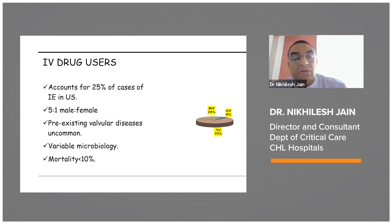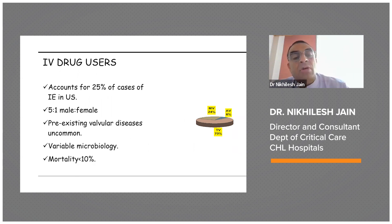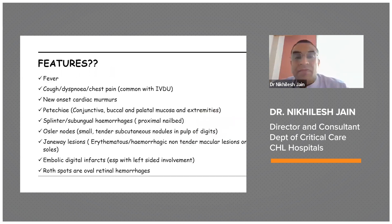IV drug abuse accounts for 25 percent of cases of infective endocarditis in the US, and in India many cases are reported from Punjab. The male-to-female ratio is 5:1. It is very uncommon for these patients to have pre-existing valvular disease, the microbiology is variable, and mortality is less than 10 percent.